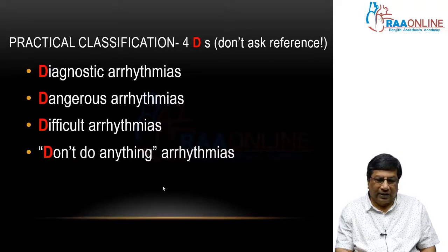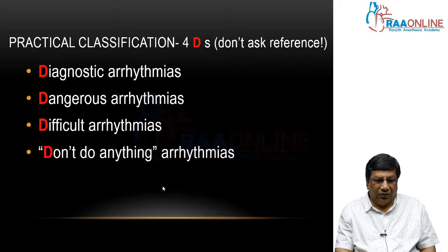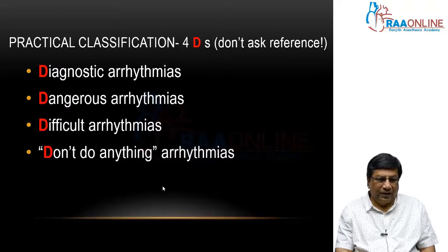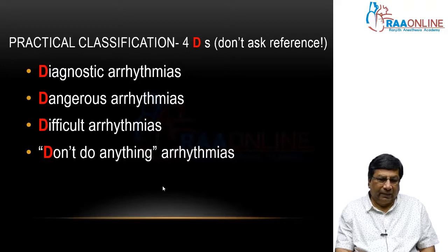D for Diagnostic arrhythmias, next D for Dangerous arrhythmias, next D for Difficult arrhythmias, and the fourth is Don't Do Anything arrhythmias. We'll classify arrhythmias in Acute Coronary Syndrome into these four D's and look at the ECGs and management in each one of these four segments.